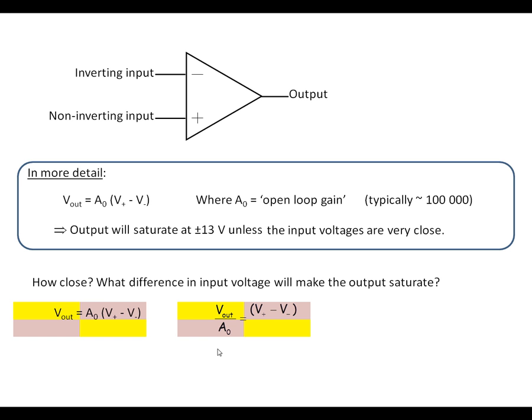Now what we're going to do is put the numbers in. So when it's just saturated, Vout is 13 volts, we put the open loop gain, let's put 100,000 in there, and when we do this we can find that the difference between the inputs that will make this saturate at the output is 130 microvolts.